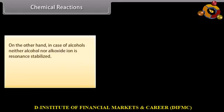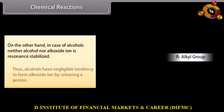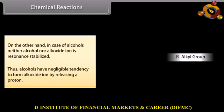Hence, phenol has a greater tendency to change into the more stable phenoxide ion by releasing a proton. In the case of alcohols, neither alcohol nor alkoxide ion is resonance stabilized. Thus, alcohols have negligible tendency to form alkoxide ion by releasing a proton.